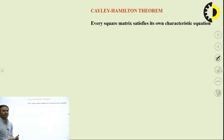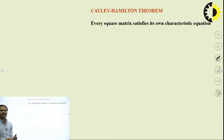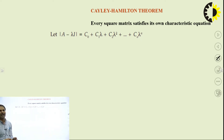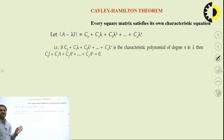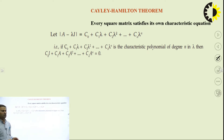A matrix is called a square matrix when the number of rows and number of columns are equal. The statement of the theorem is: every square matrix satisfies its own characteristic equation. When we have a matrix A, the value of the determinant of A minus lambda I is called the characteristic equation. For an n by n square matrix, this gives an nth order polynomial equation.